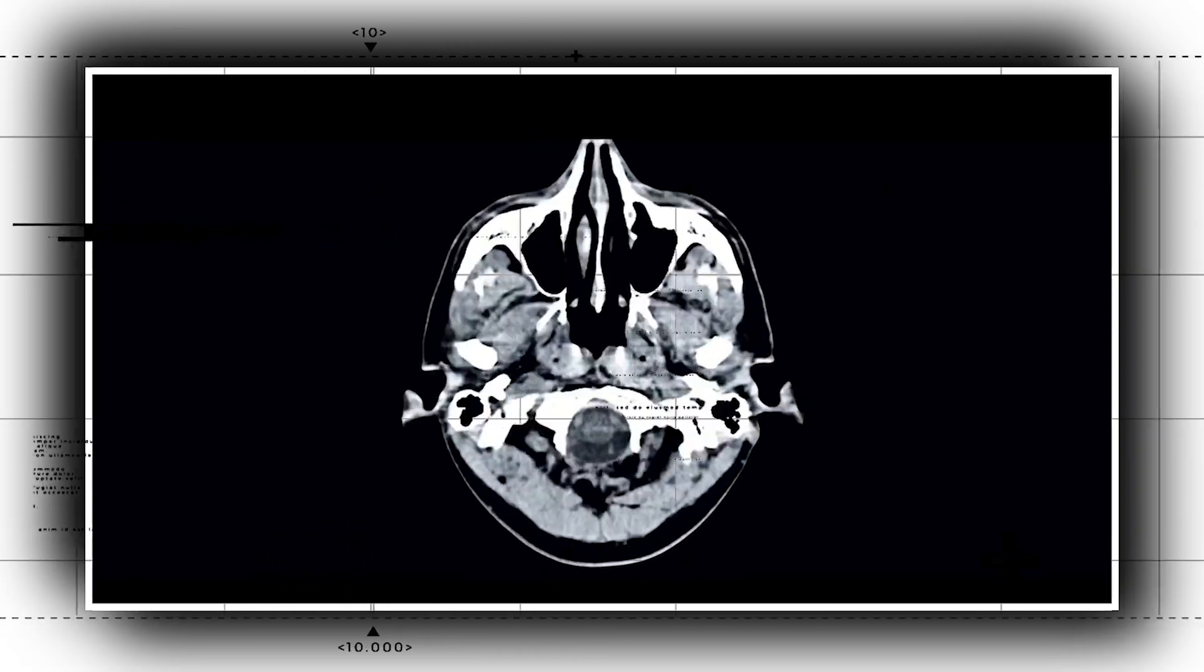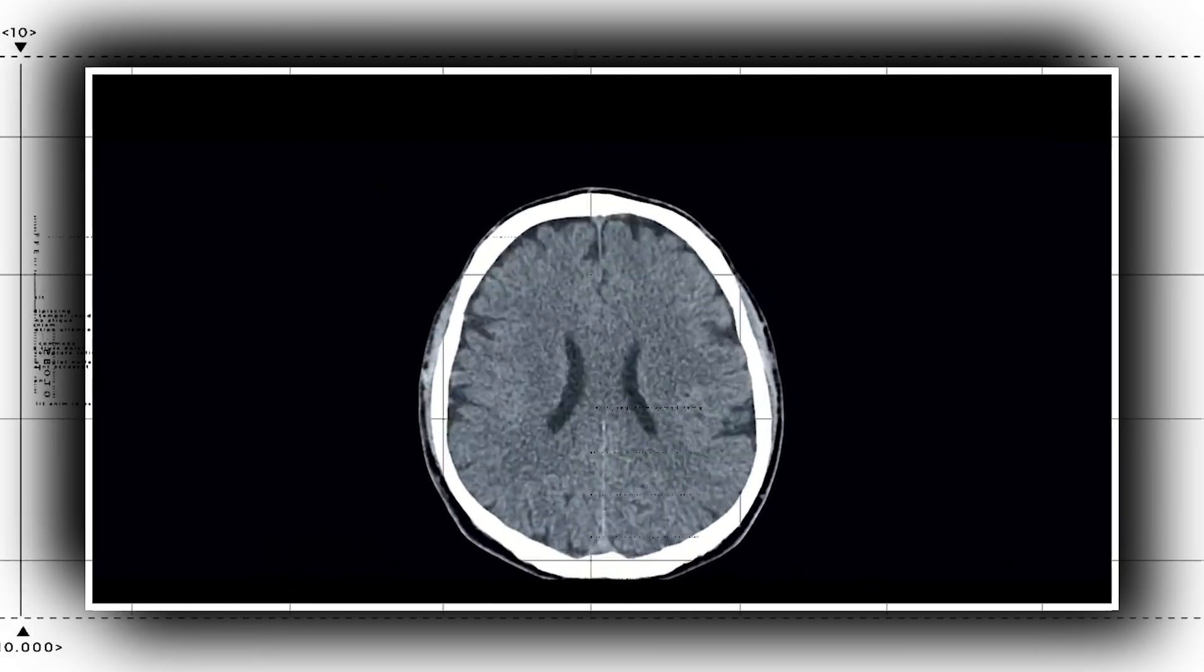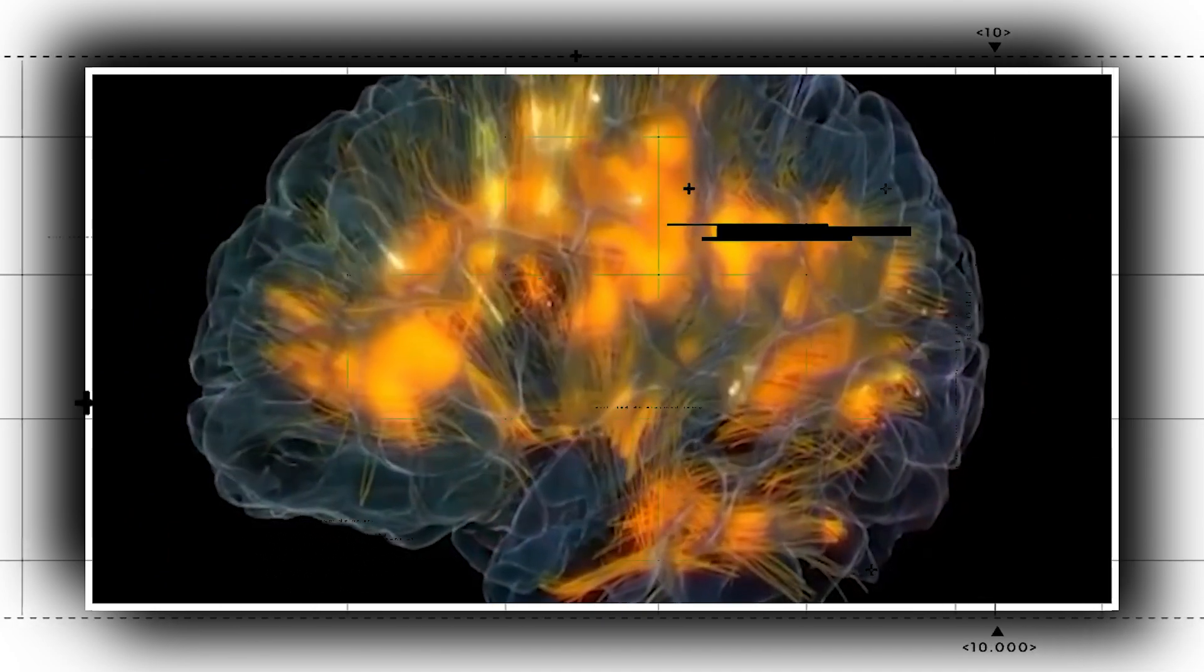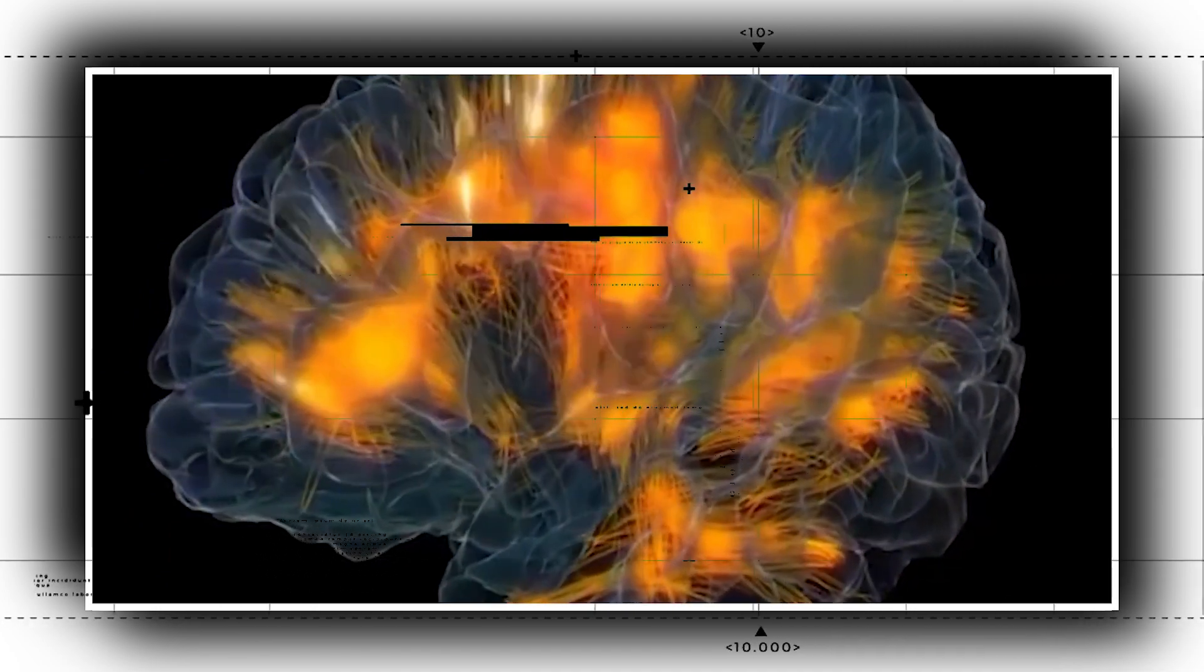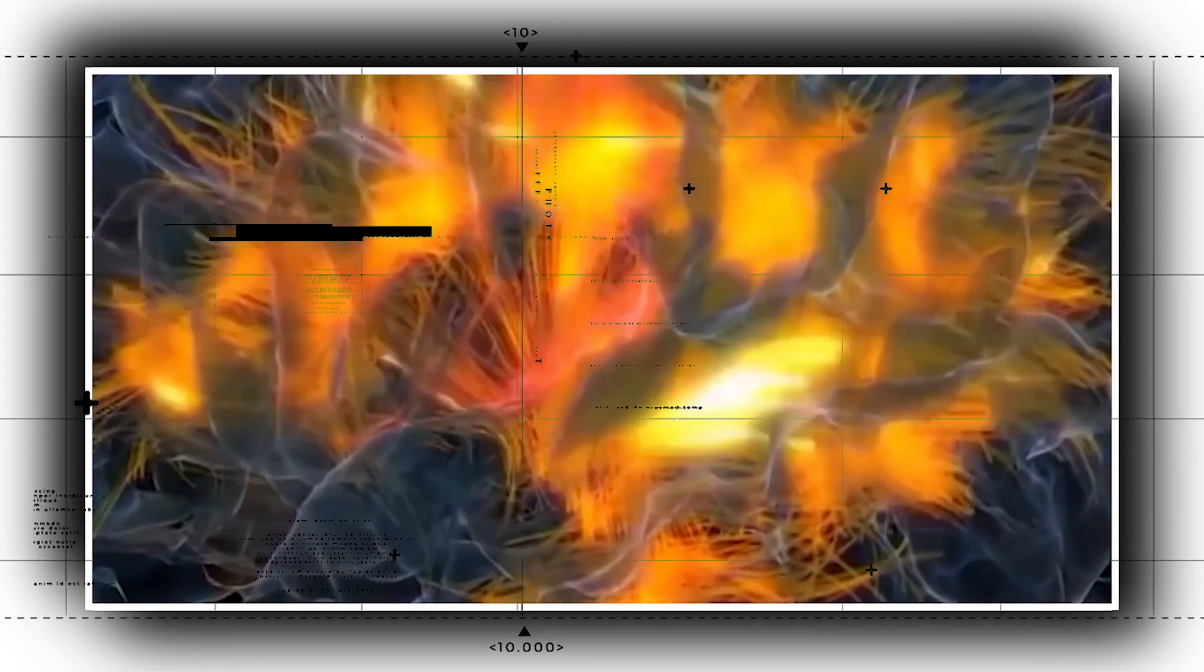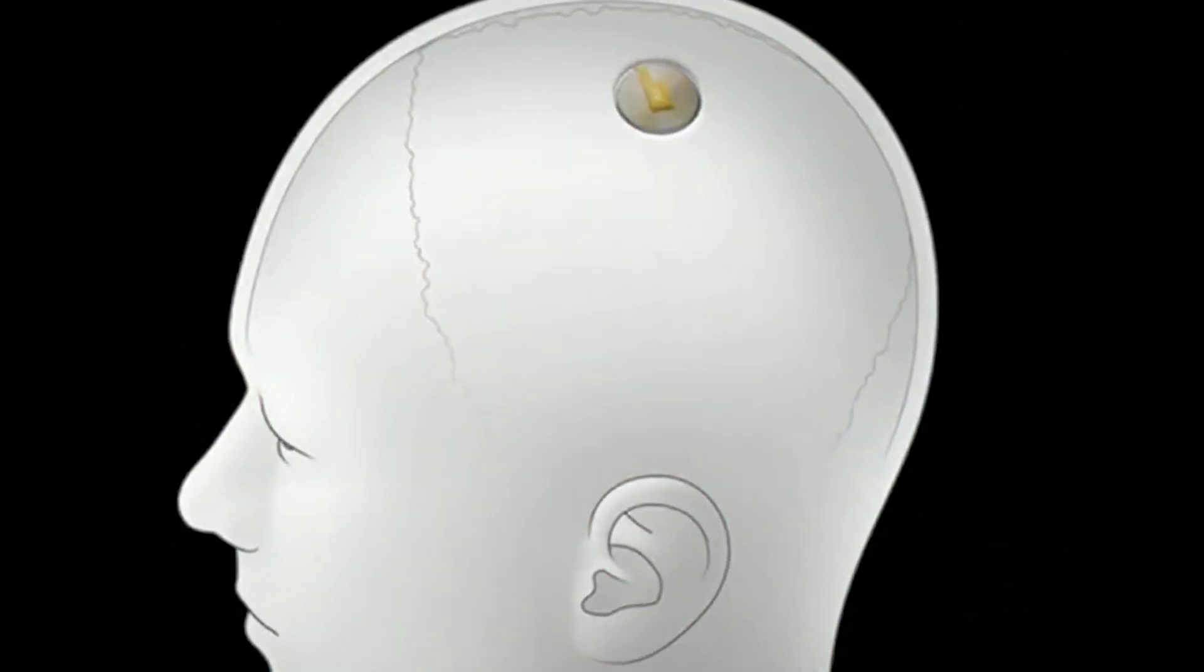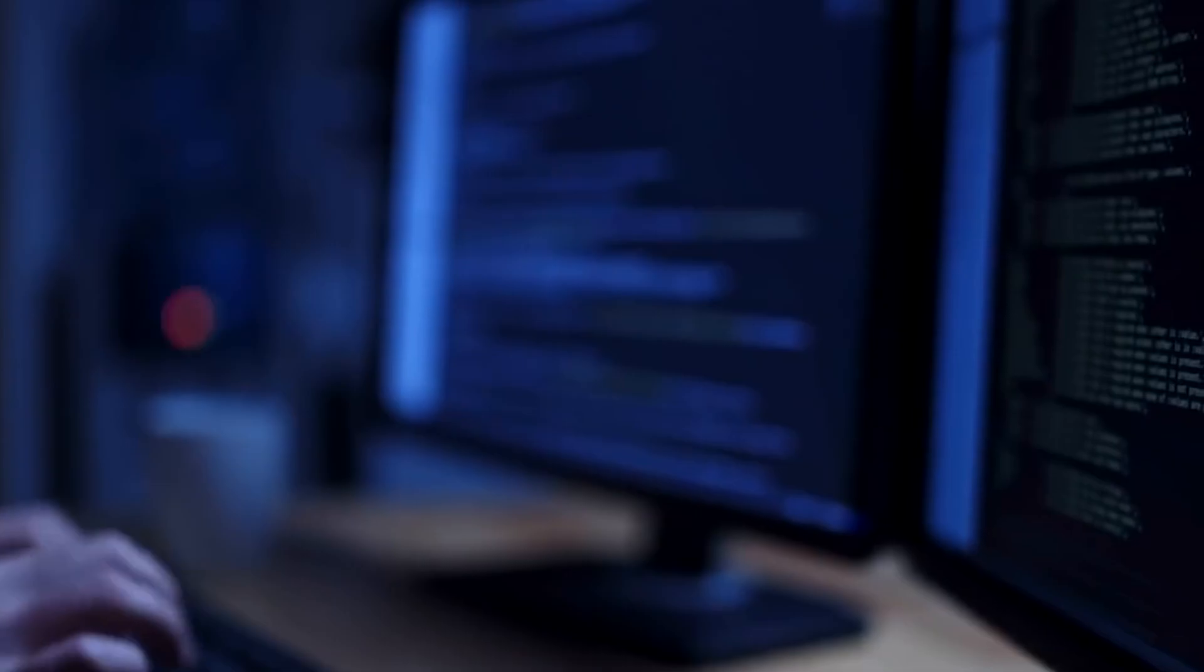BrainGate employs the Utah Array, which is a network of stiff needles with up to 128 electrode channels. Not only are there fewer channels than Neuralink claims, which means fewer data from the brain is captured, but the threads are also stiffer. The brain shifts in the skull, which poses a problem for long-term functionality with rigid arrays.